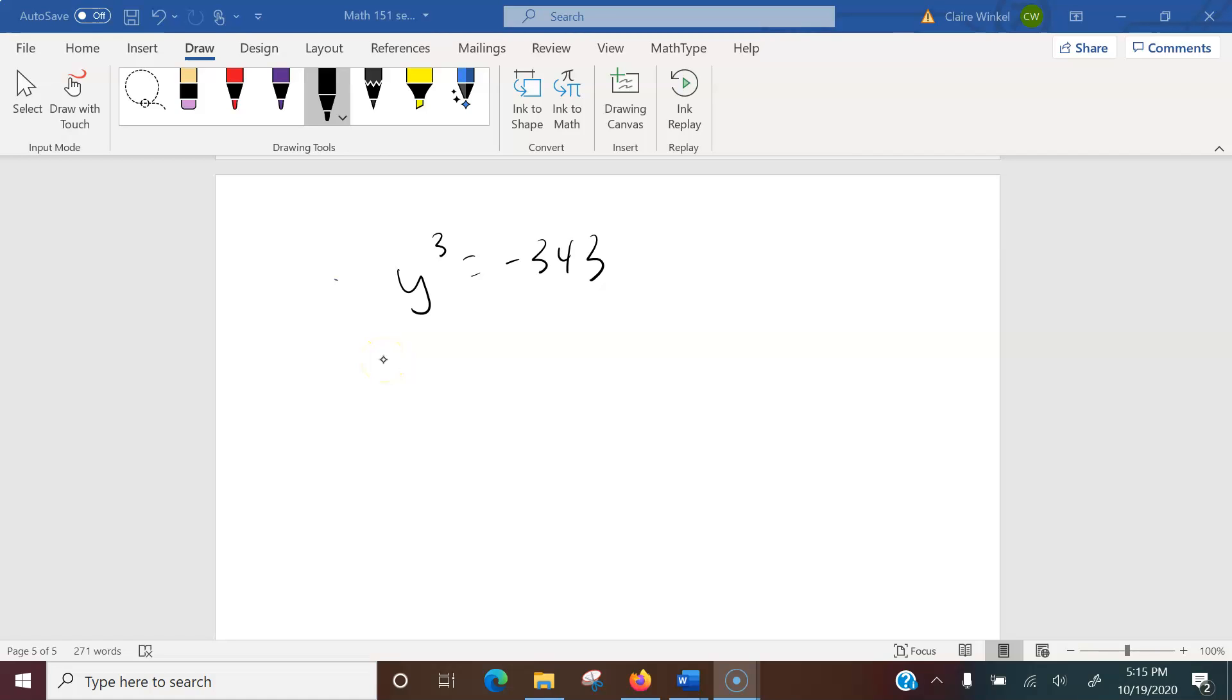To solve this problem, I would start by moving the 343 over. So that would give us y cubed plus 343 equals 0.